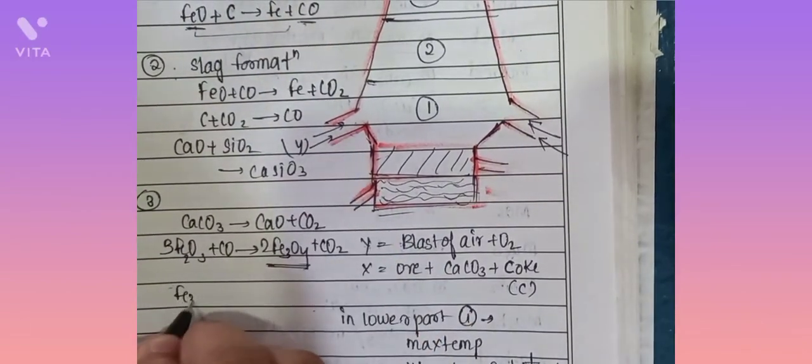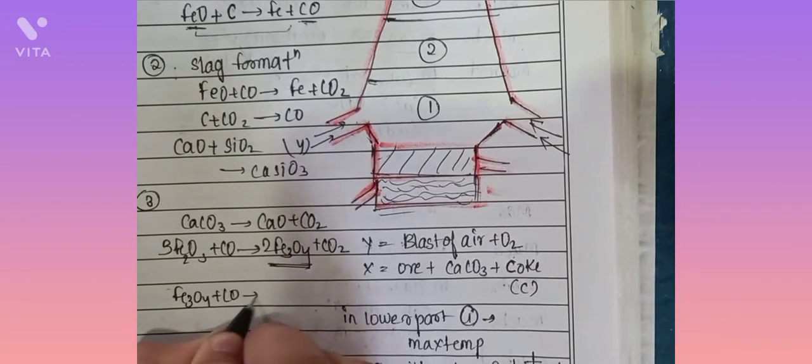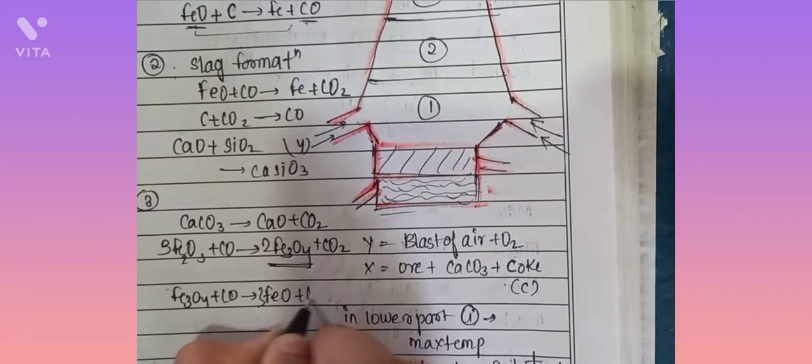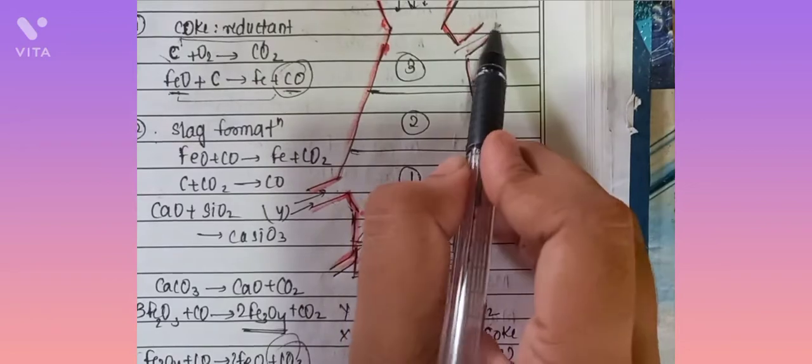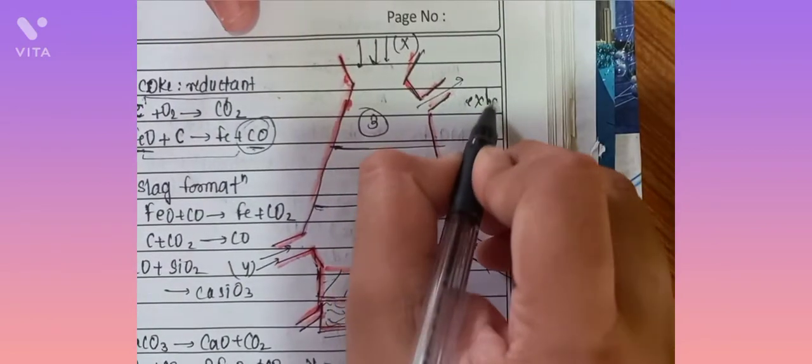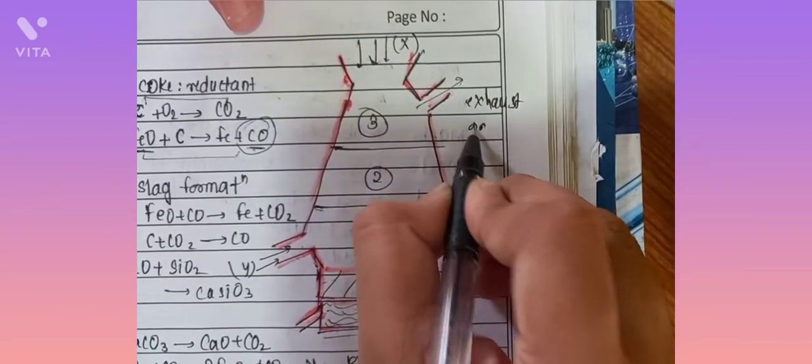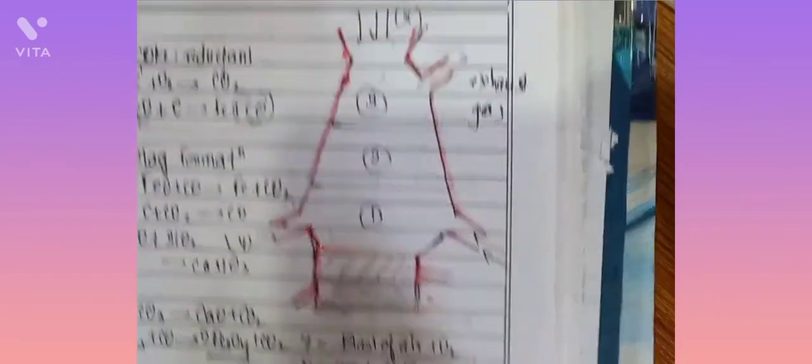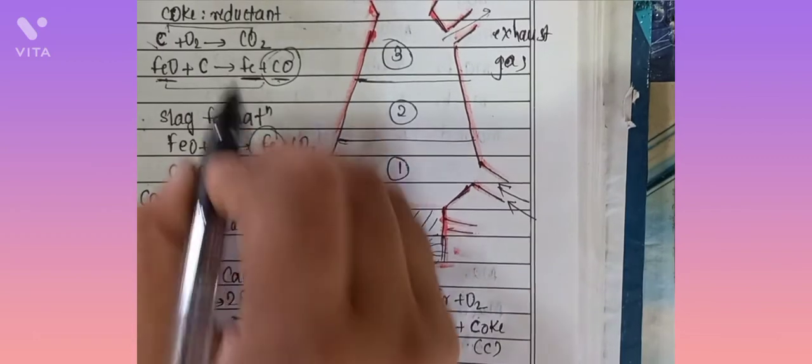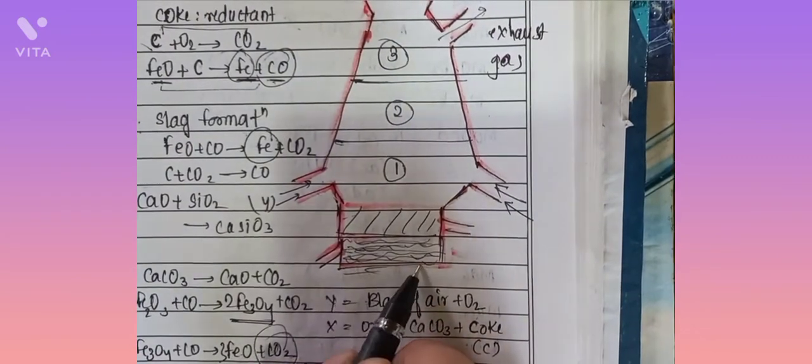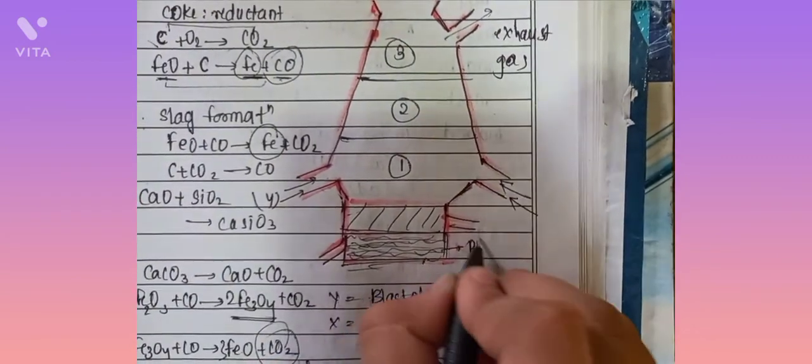This again reacts with carbon monoxide and we get FeO and CO2. These gases CO2 and CO are released through the exhaust. The iron formed in this process settles at the bottom as pig iron.